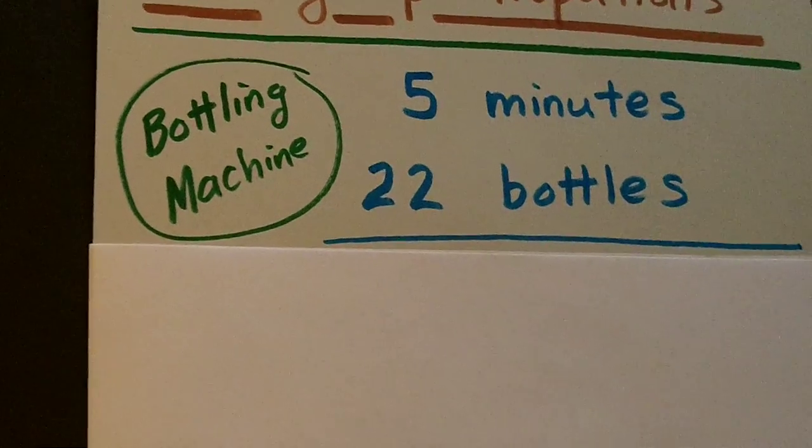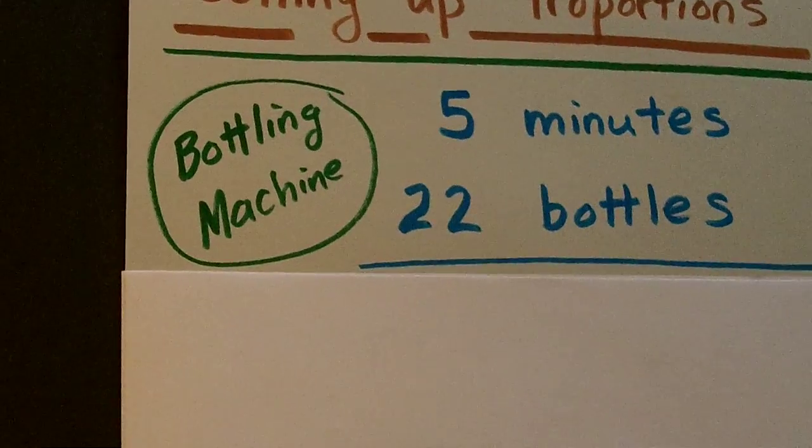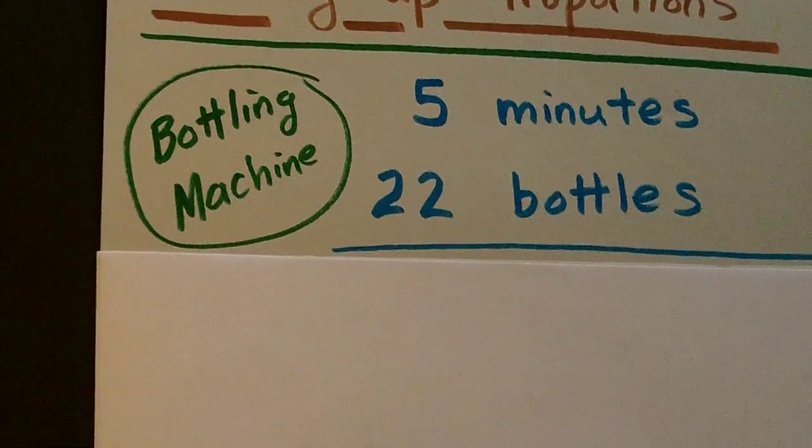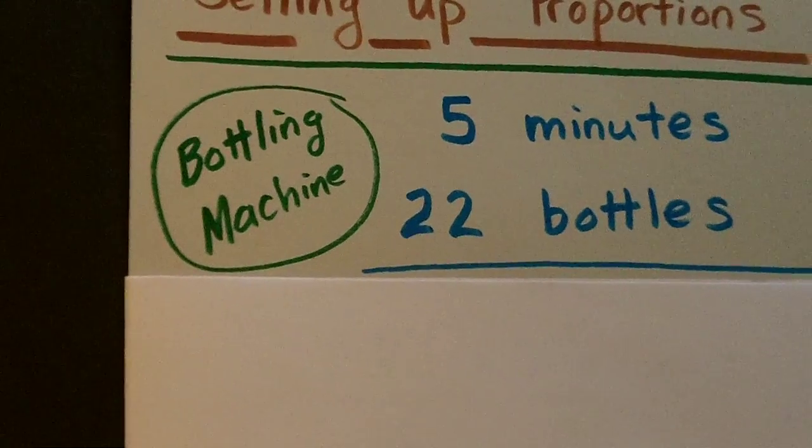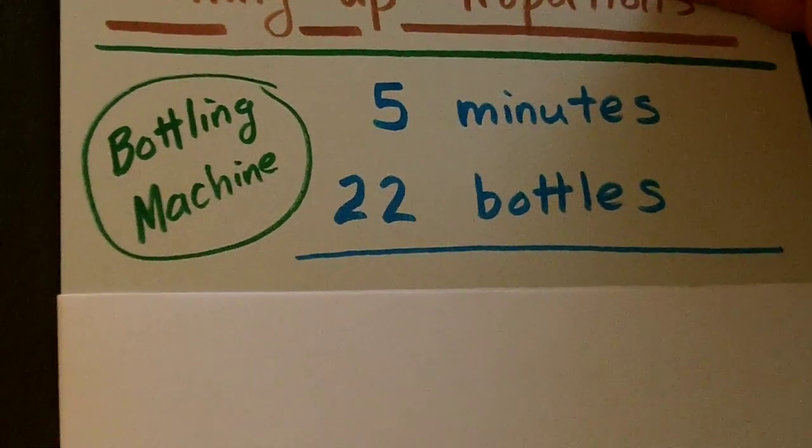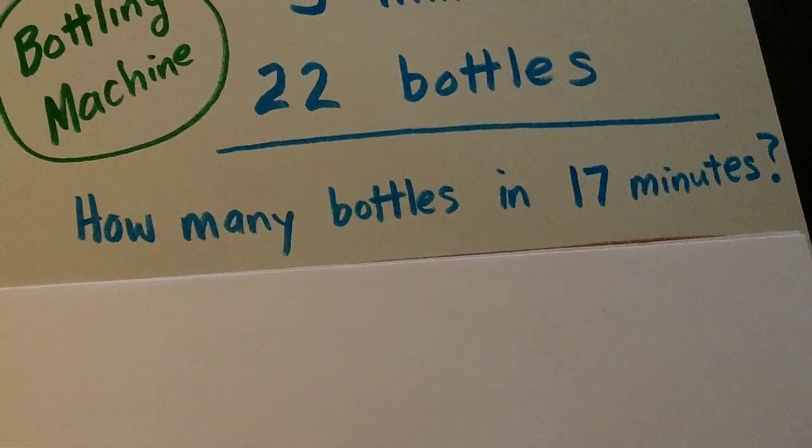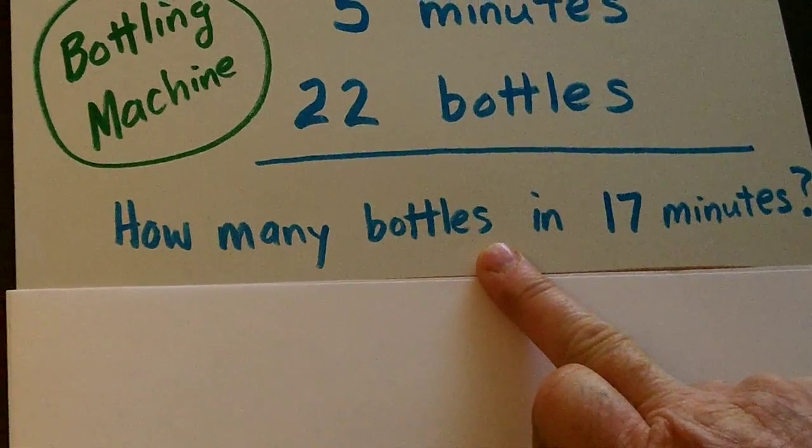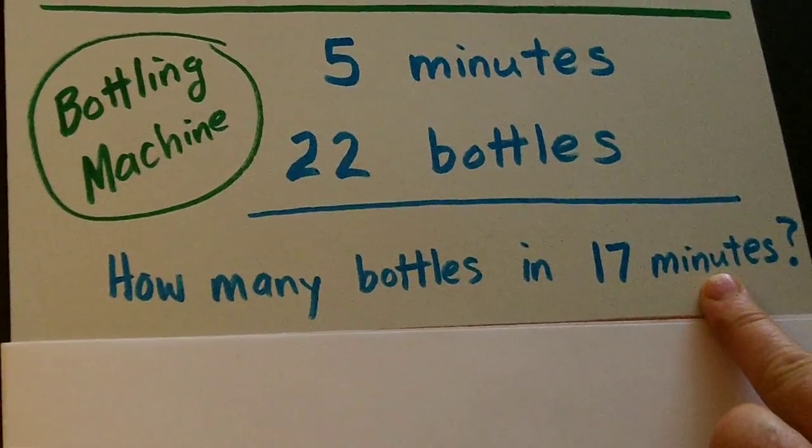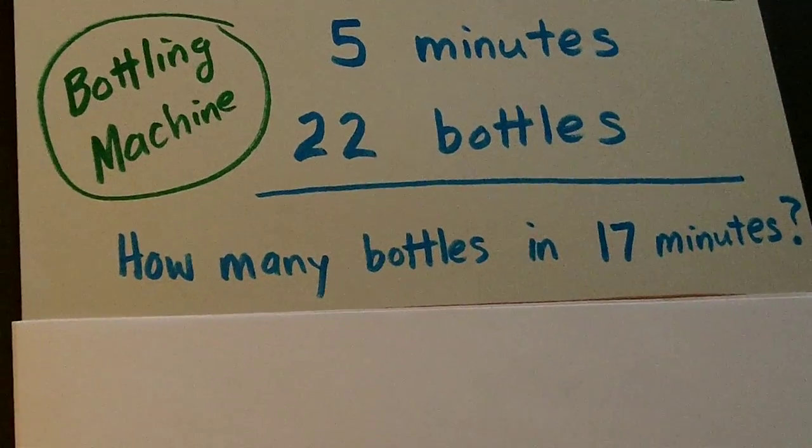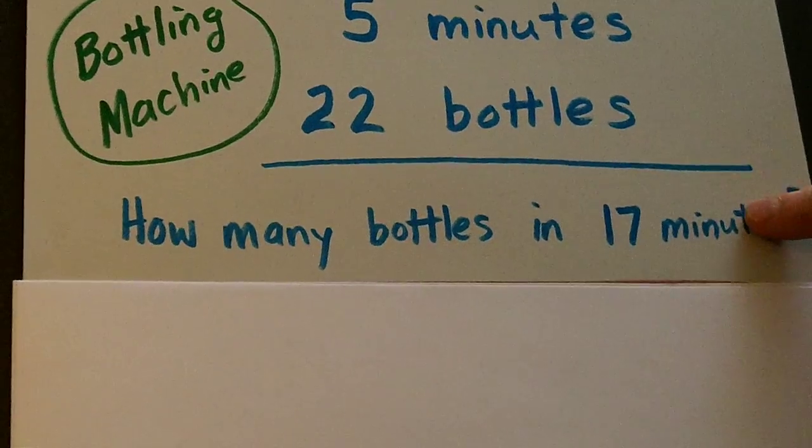So then if that machine always runs at the same rate, it's going to produce the same number of bottles per minute, the same ratio. So then we want to figure out this question: How many bottles will be produced in 17 minutes by the same machine that does this?